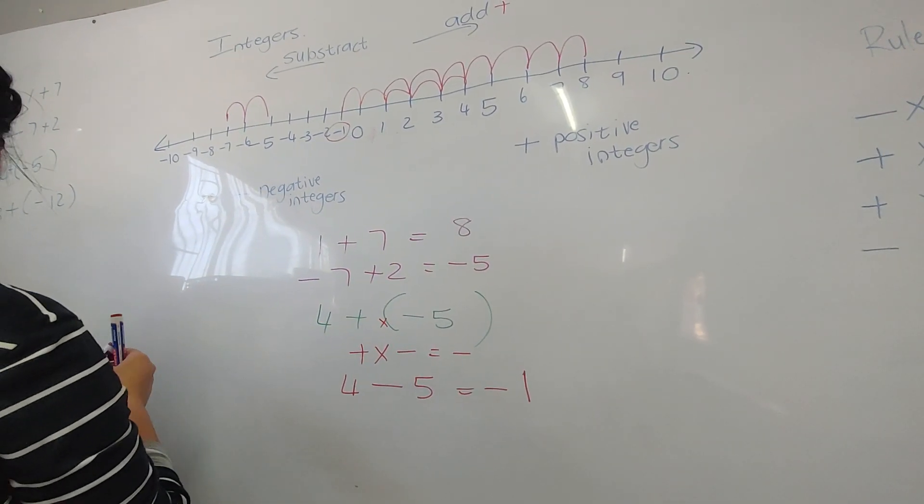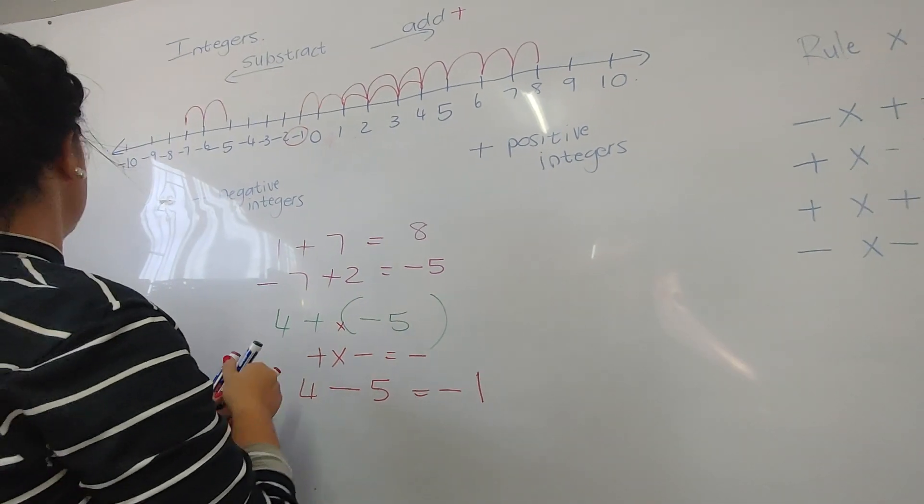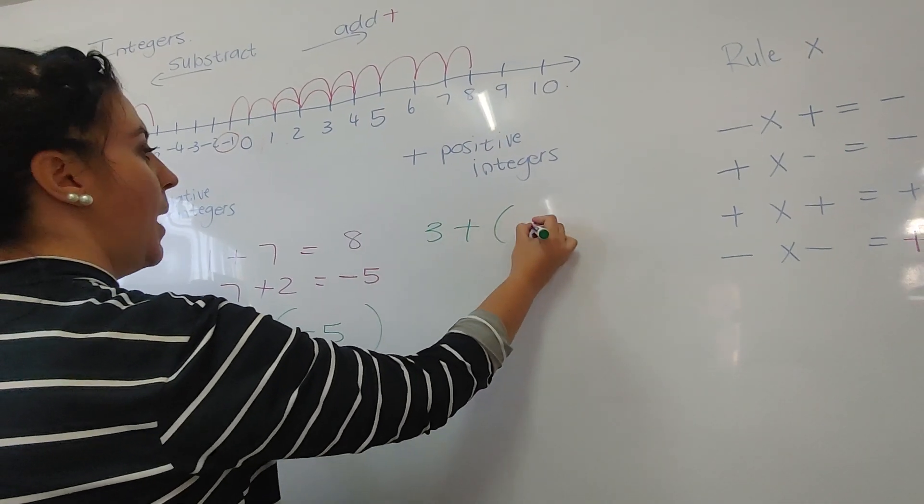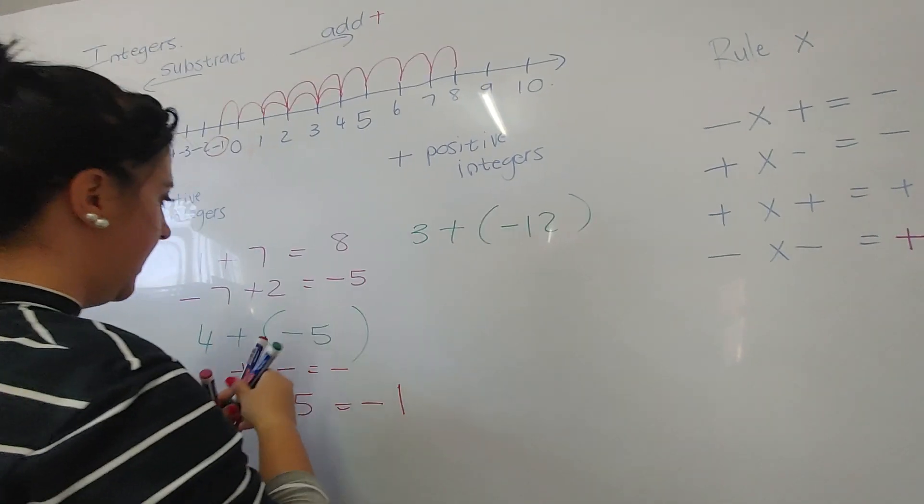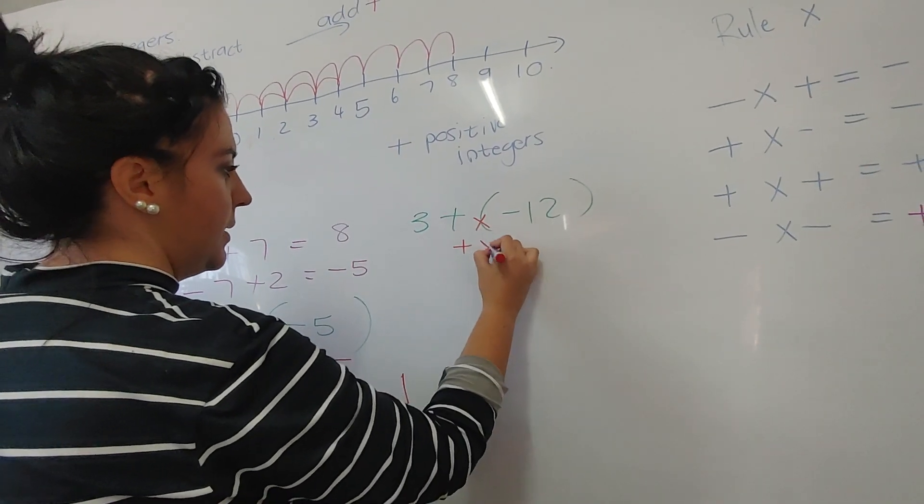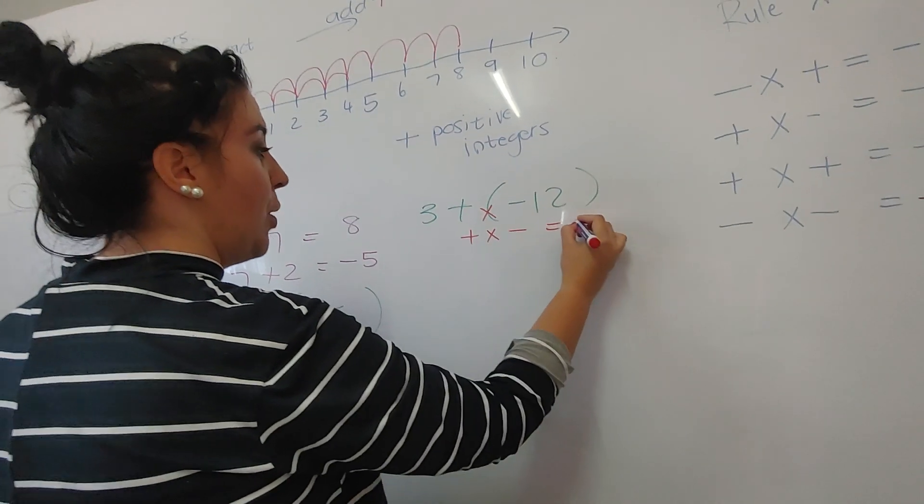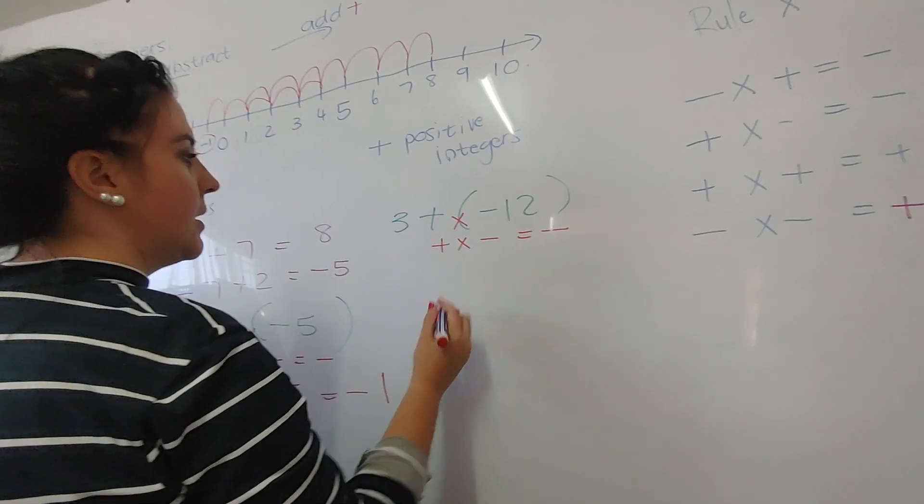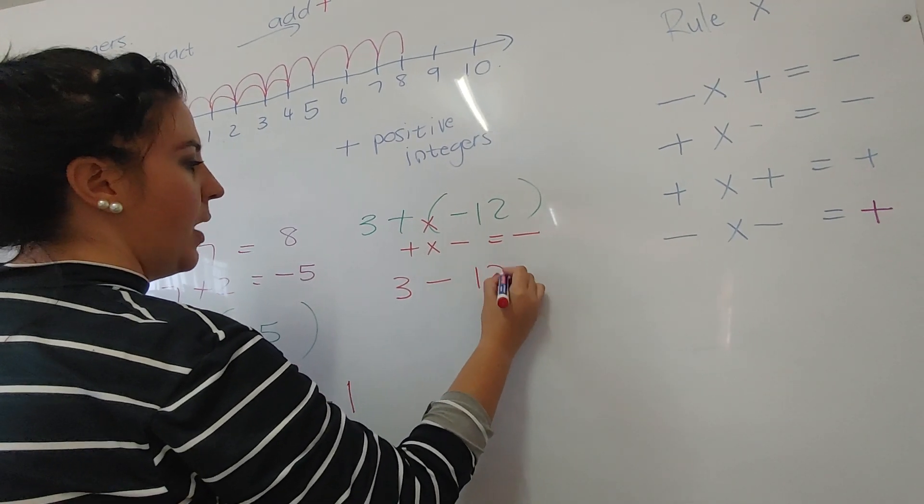I'm going to do another one. Let's say 3 + (-12). Again, we can see that there is a plus times a minus. That's going to give you a minus. We've learned that. So 3 - 12.